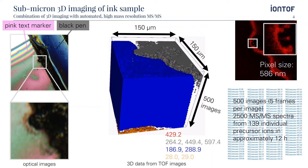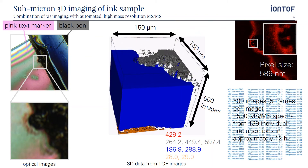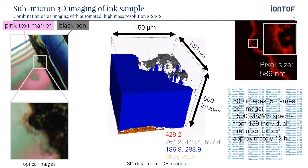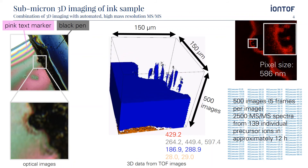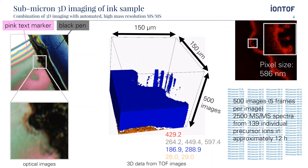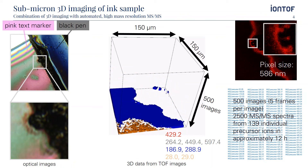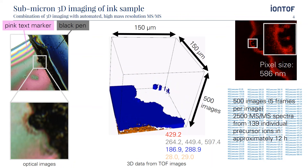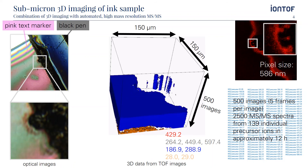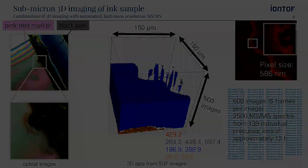In addition to the 3D cube consisting of 500 consecutive TOF-SIMS images from different layers, 500 MS and 2500 MS-MS spectra were acquired using the Orbitrap mass analyzer. Precursors were chosen in a fully automated fashion on the basis of signal intensity and other factors. All in all, the whole experiment was performed in approximately 12 hours, fully unattended.